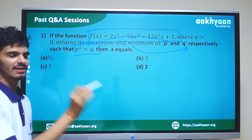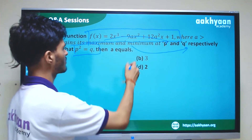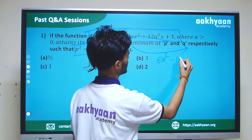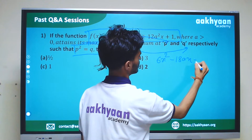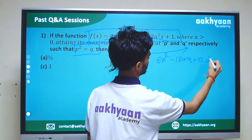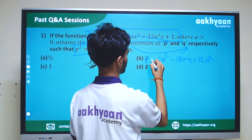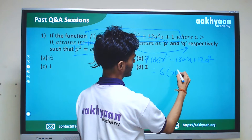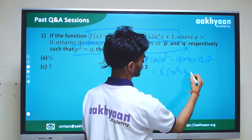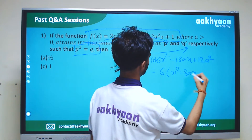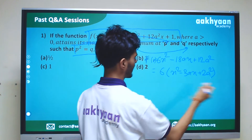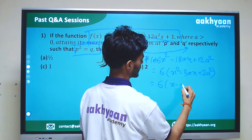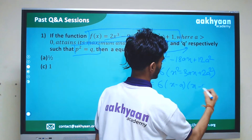For maximum and minimum, the first derivative equals zero. So the first derivative f'(x) is equal to 6x² minus 18ax plus 2a², which factors as 6(x minus a)(x minus 2a).